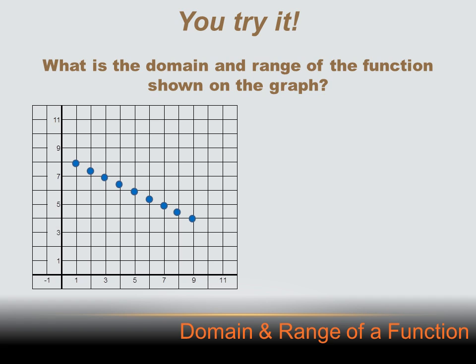What's the domain and the range of the functions shown on this graph? Well, you remember domain is the x values. And you can see we've got a point right there, and its x value is 1. And we've got a point there, and its x value is 2. And there's 1 for 3. And they go all the way down to an x value of 9. So our domain is 1, 2, 3, 4, 5, 6, 7, 8, and 9.